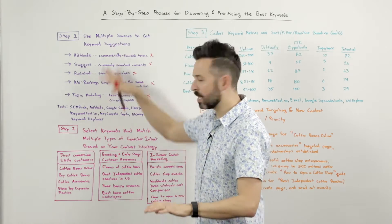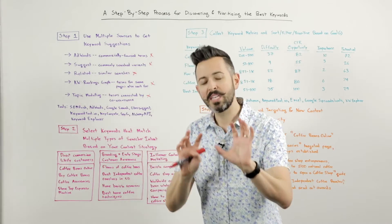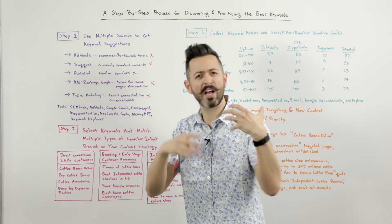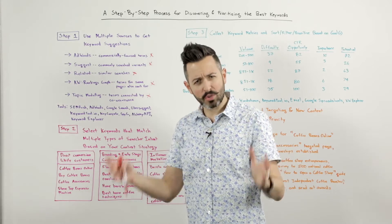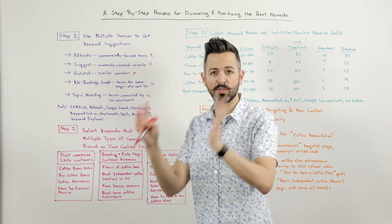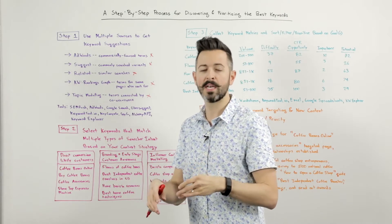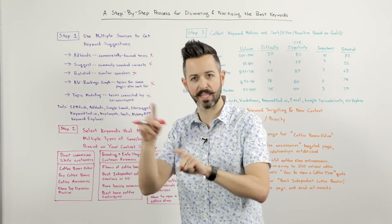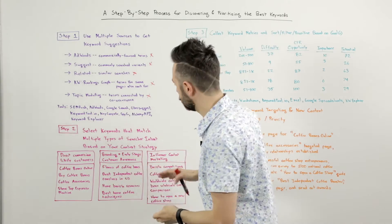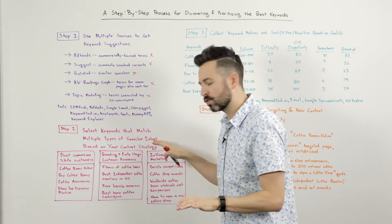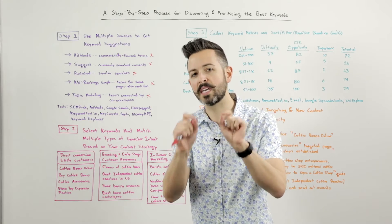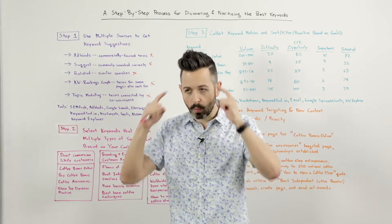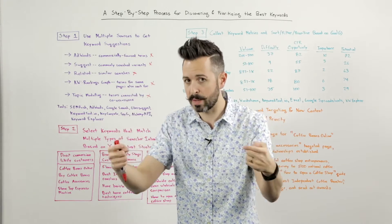Now, step two. I've done my keyword suggestions. I've got all of these. Now I need to pick which keywords from these suggestion lists am I actually going to try targeting. And to do that, it's not really a tool-based thing, although you certainly could use something like a Google Doc or Excel or a Google Spreadsheet, or you could do it right inside some of these tools. But what I want to do is match multiple types of searcher intent based on your content and keyword goals.